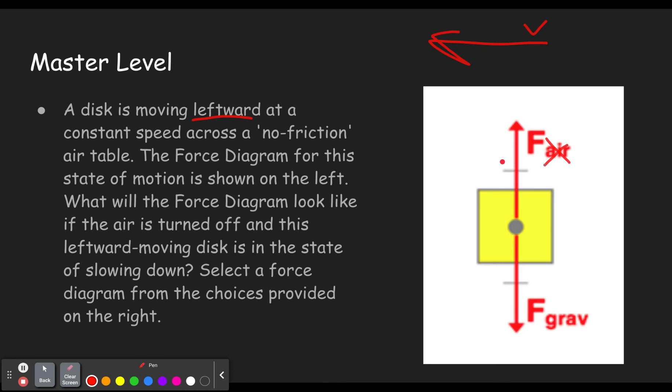So the first question we want to ask ourselves is, is this thing going to accelerate down? Because if so, then this would be the only force. Otherwise, there has to be something pushing up to balance the vertical direction. And since there's no longer any air resistance, that must be something else. Well, this puck is resting on the air table. So there will be a normal force. Sometimes it's just a capital N. Other times you'll see the whole thing written out.